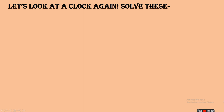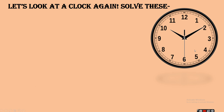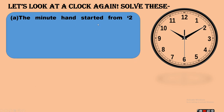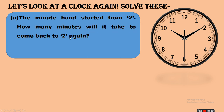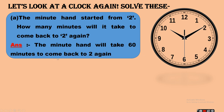Let us look at the clock again and solve these questions. First question: the minute hand started from 2 — how many minutes will it take to come back to 2 again? After completing one full round, the minute hand comes back to 2. We already know that one full round of the minute hand equals 60 minutes. So the answer is: the minute hand will take 60 minutes to come back to 2 again. And 60 minutes equals 1 hour.